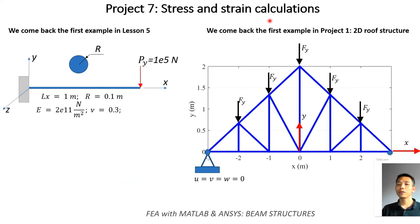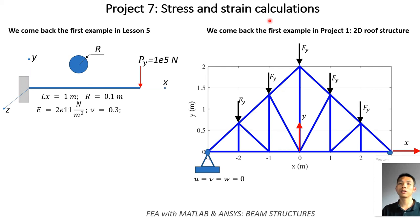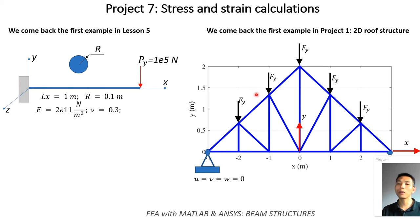Project Number Seven addresses the fact that so far we have only analyzed structure deformation — displacements and rotations. We also need to know how to calculate strain and stress in beam structures. We will come back to investigate a very simple beam structure and a 2D group structure. Through these two projects, you will learn how to check ANSYS results for stress and strain, and how to write FEM code to check stress and strain in MATLAB and make comparisons between the two calculations.